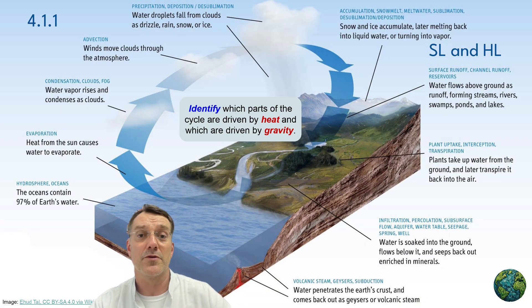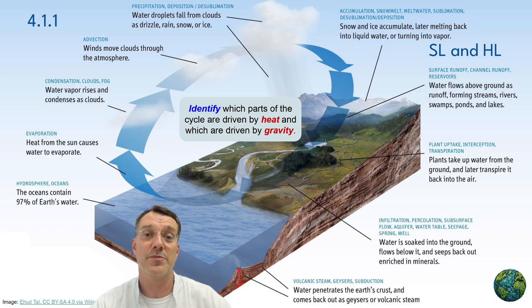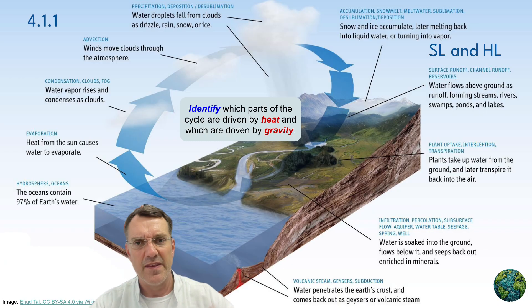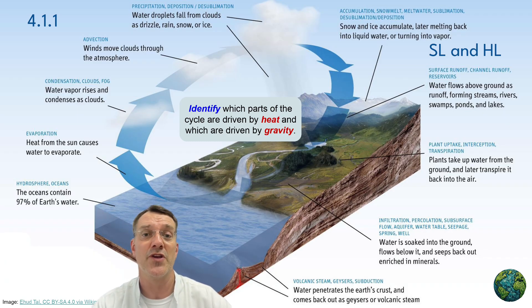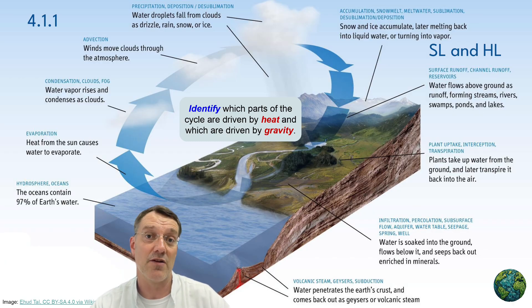Looking at a diagram of the hydrological cycle, you can identify the main processes and components. Notice how solar radiation drives evaporation from the oceans, while gravity pulls precipitation down and drives river flow back towards the oceans. This continuous movement of water between the atmosphere, land, and oceans represents one of Earth's most important systems. In the hydrological cycle, we need to identify which parts of the cycle are driven by heat and which are driven by gravity.